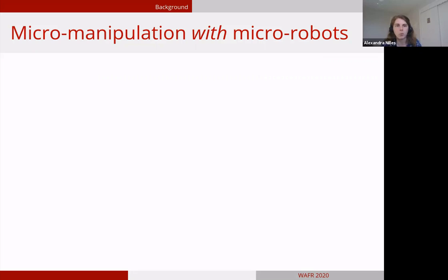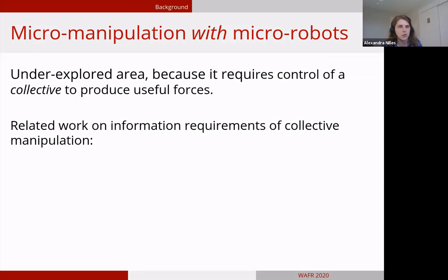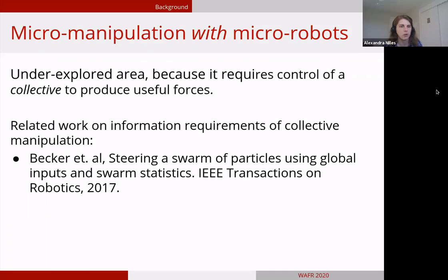We're presenting the beginning of theoretical work toward this area. One challenge is that to provide useful forces with micro robots, we need to control an entire collective without the ability to individually control each agent. Of course, we're not the first people to work on this. There has been some interesting work on information requirements of collective manipulation at the micro scale. Aaron Becker and his team is a leader in this field. They've done work on human-in-the-loop control, looking at what statistics you need about the swarm of particles to be able to control them and do object manipulation.